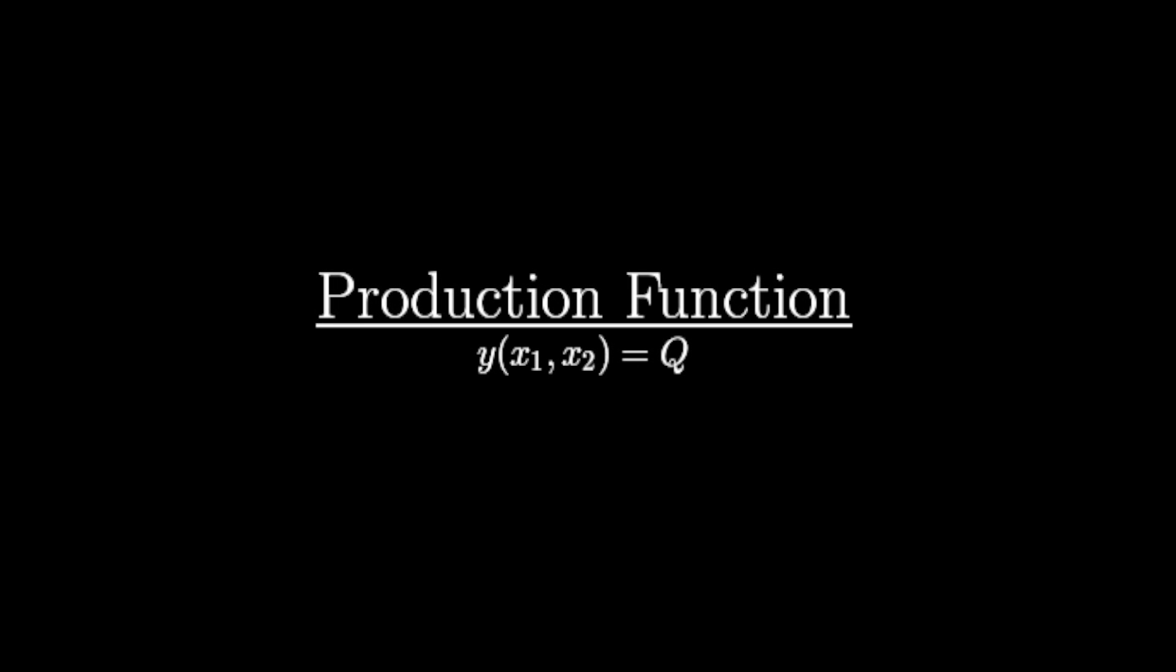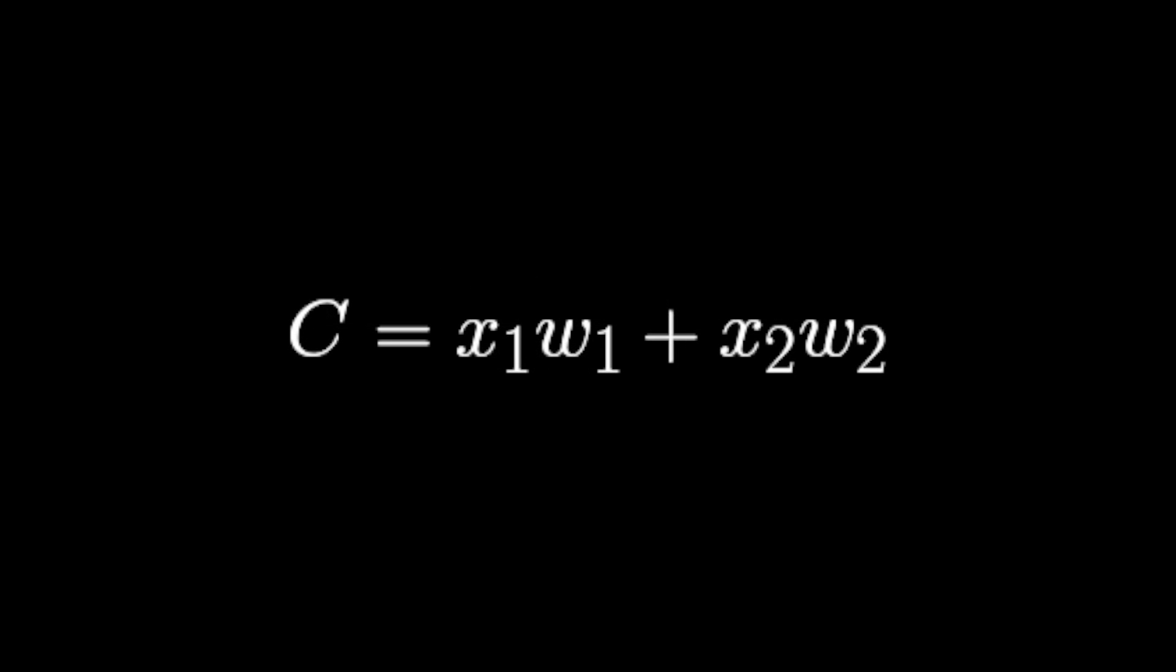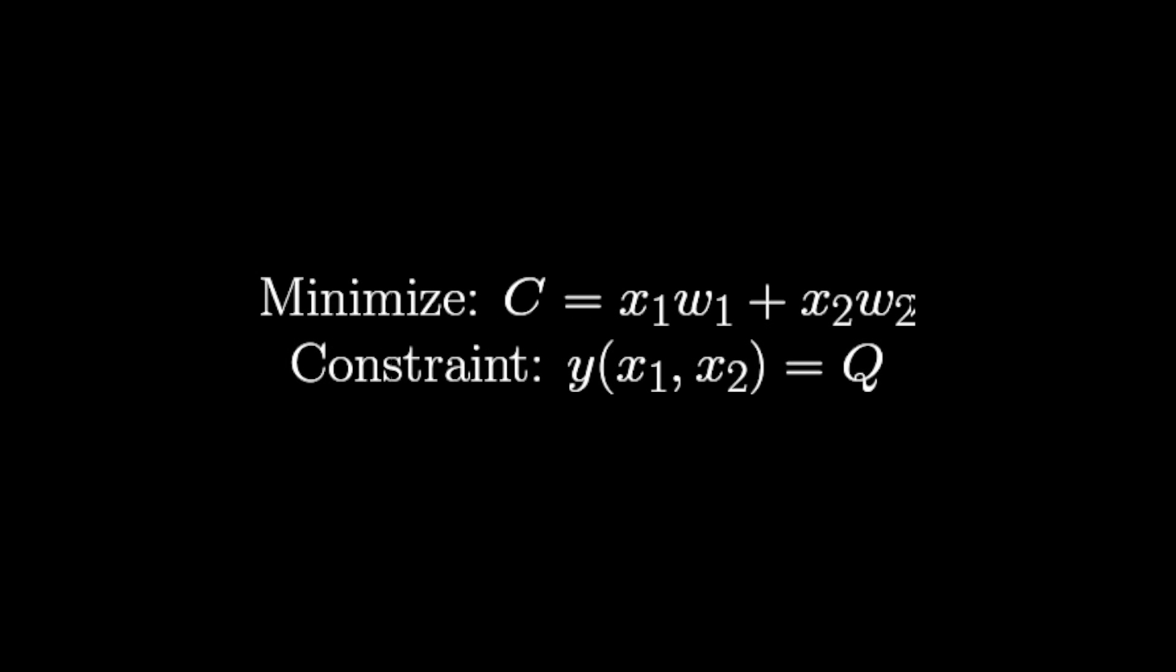When we look at problems with firms and input choice, something that's really important to describing the problem is a production function. A production function is of the form y of x1 and x2, where x1 and x2 are the quantities of each of the two inputs that a firm buys. This function, given two amounts of inputs, tells us how much the firm will be able to produce with these inputs. Given that a firm wants to reach a desired production of q, the firm wants to minimize costs when they buy inputs. So we want to minimize c subject to the constraint that our production function, y of x1, x2, equals q. Given that our inputs are both positive and that our production function is differentiable, we can find this optimal input choice.